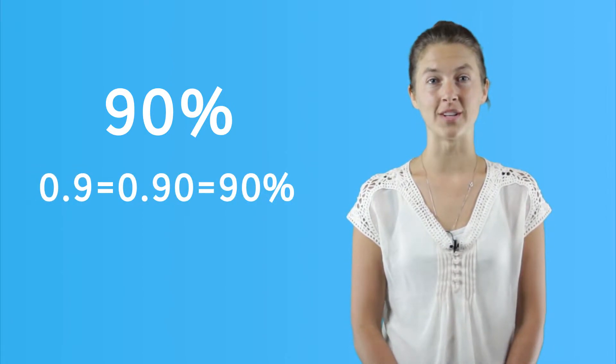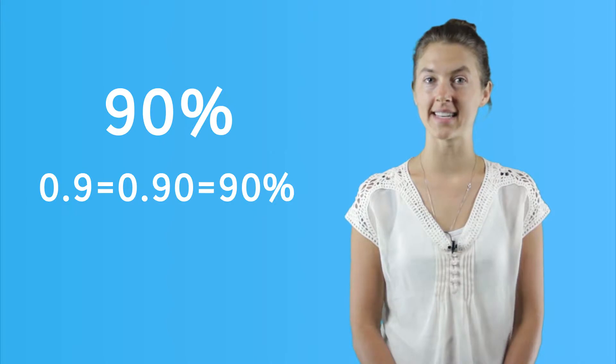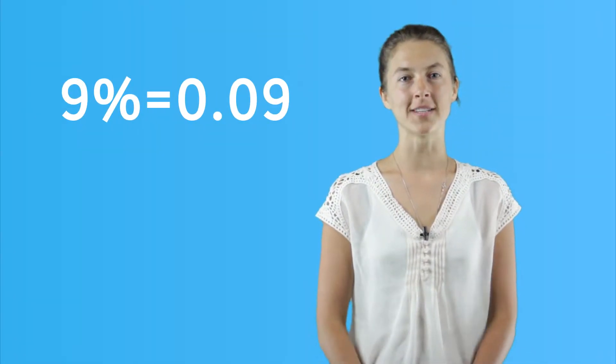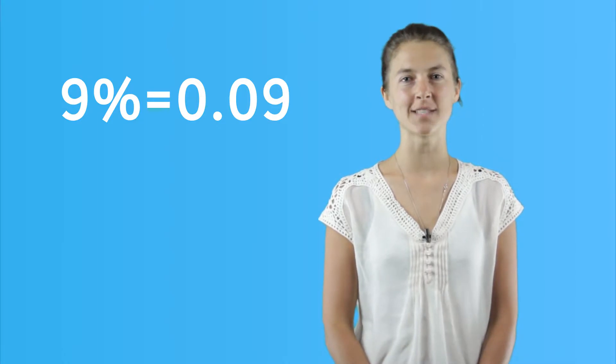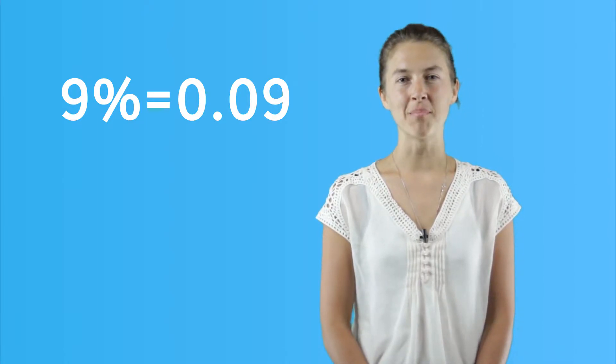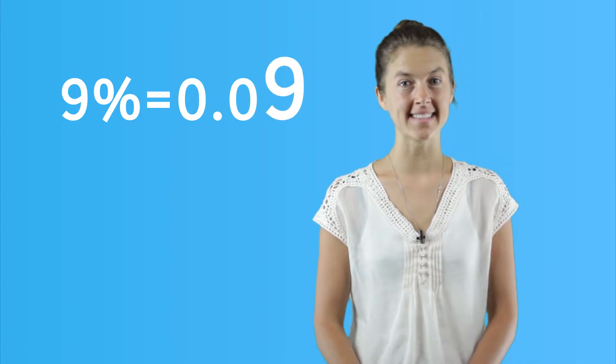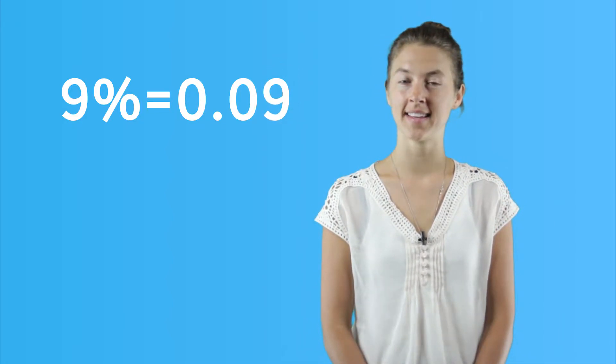So, this decimal is still 90 percent and not 9 percent. 9 percent would look like this as a decimal: 0.09, because the 9 ends in the hundredths place, and we also move the decimal point two places to the right.